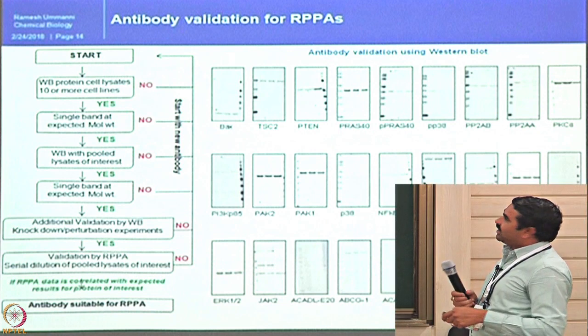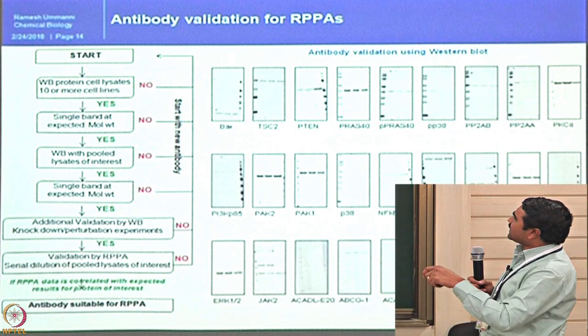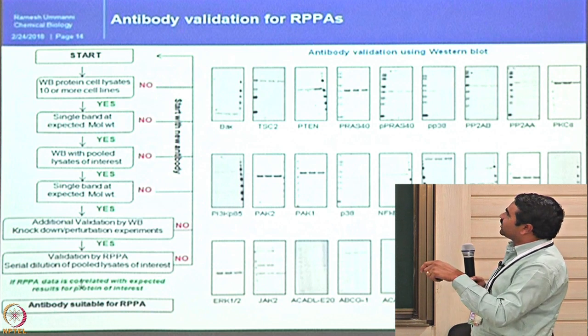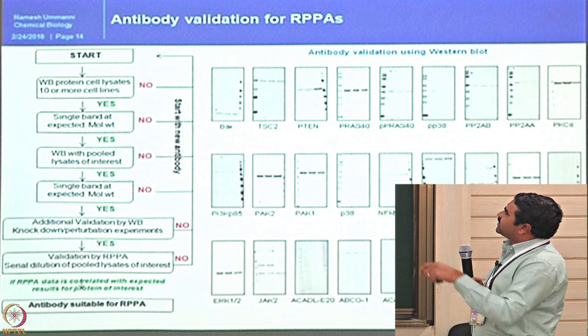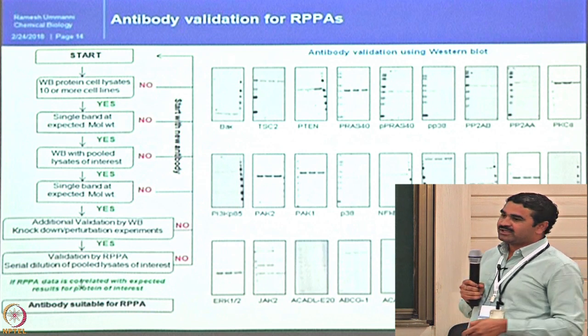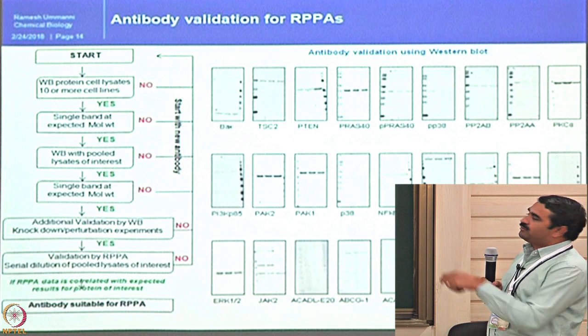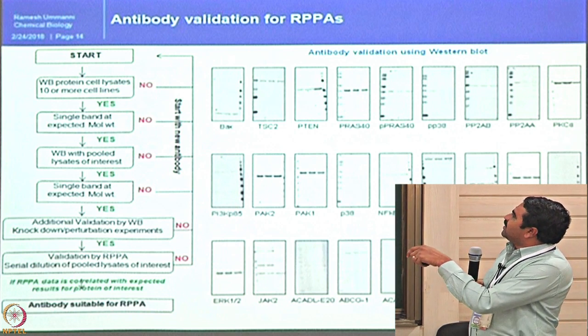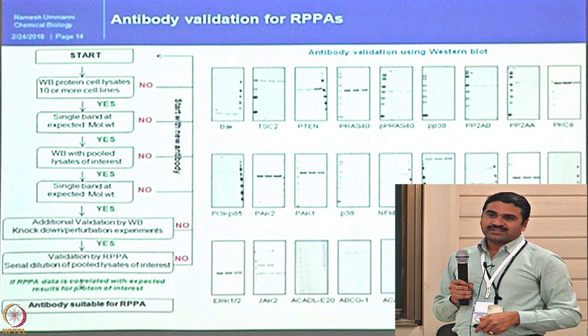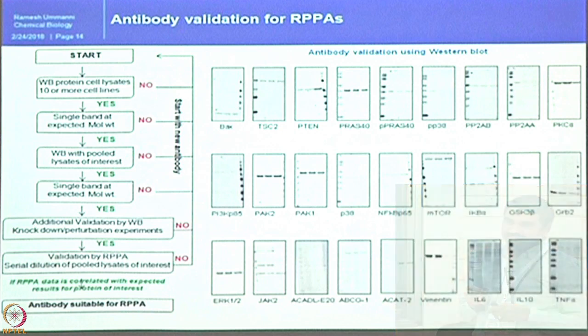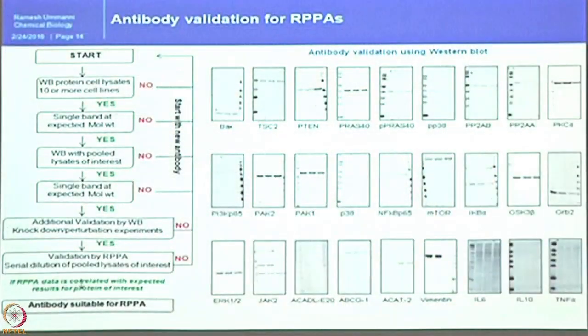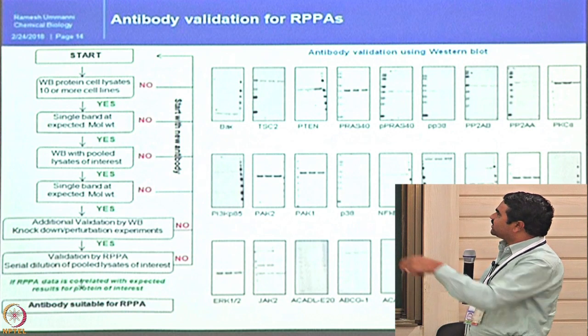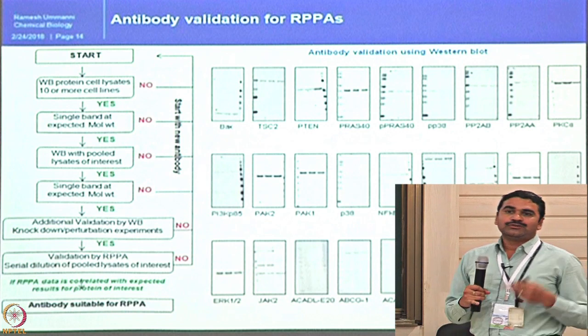The antibody validation approach starts with Western blotting: take 10 different cell lysates, run them, and do a Western blot. If the antibody gives a single band, proceed to the next step — pool the lysates from 10 or more different cell lines and run on a single lane. This confirms that even in a complex mixture the antibody can recognize the protein of interest without non-specificity.